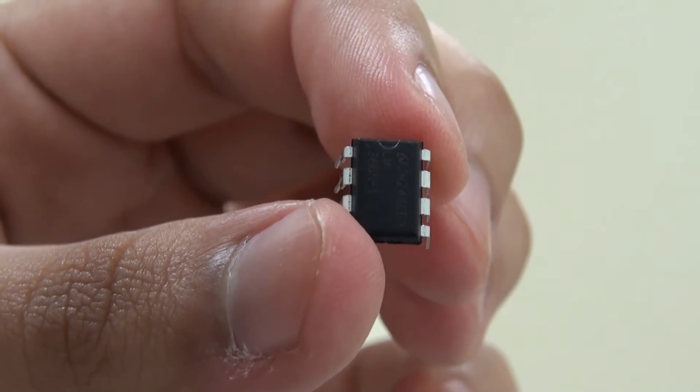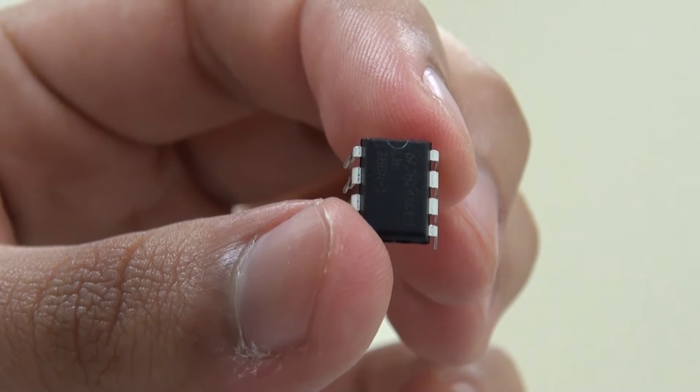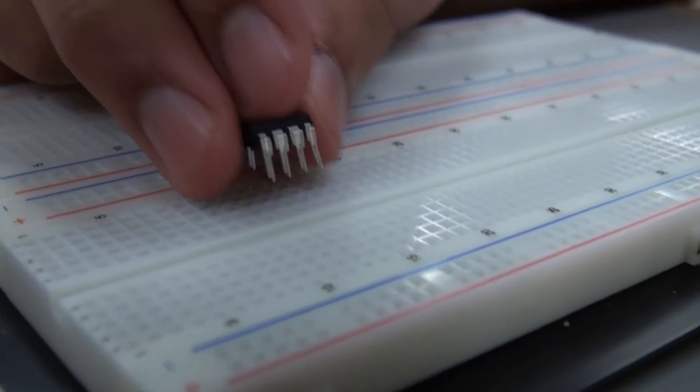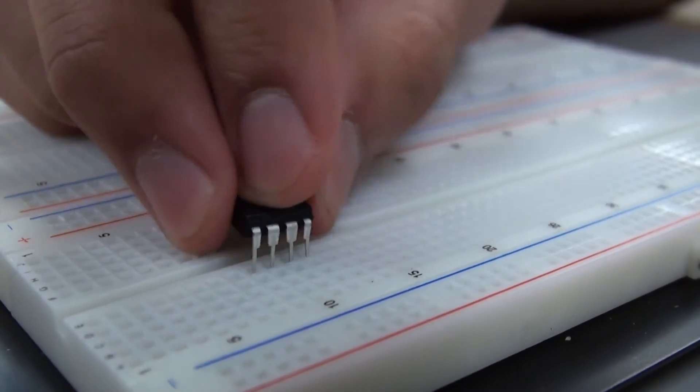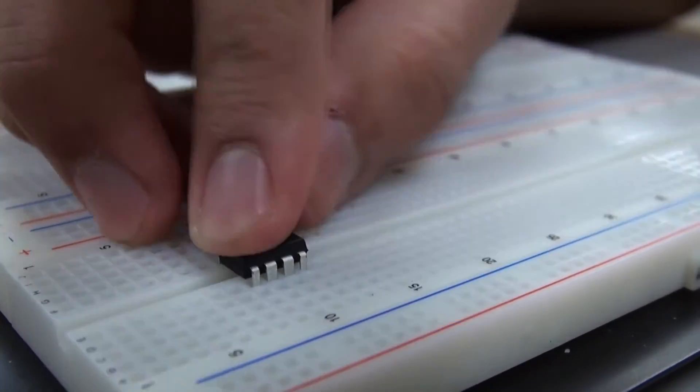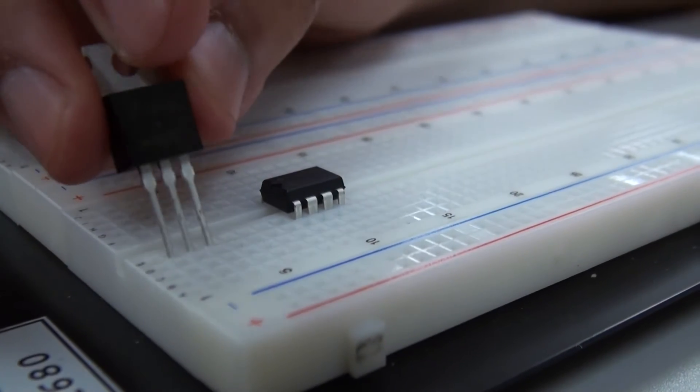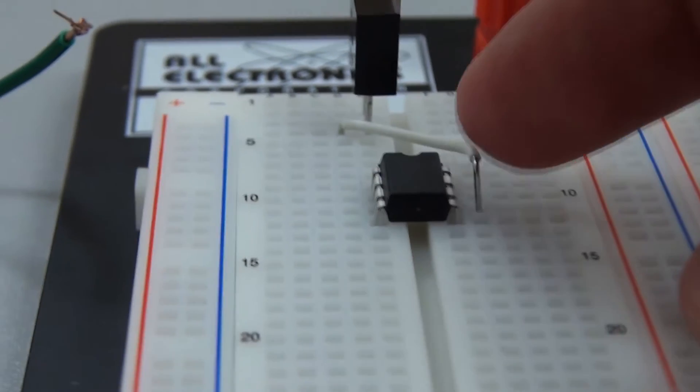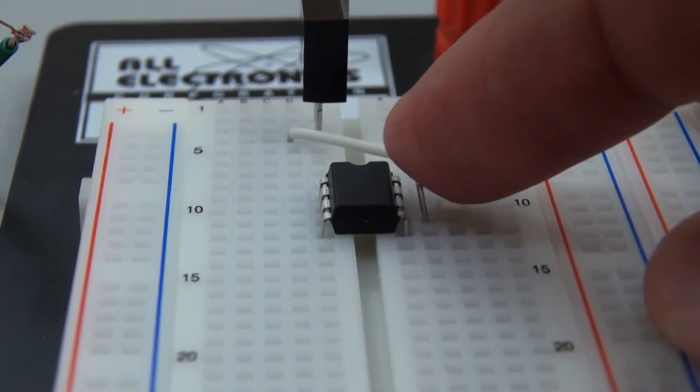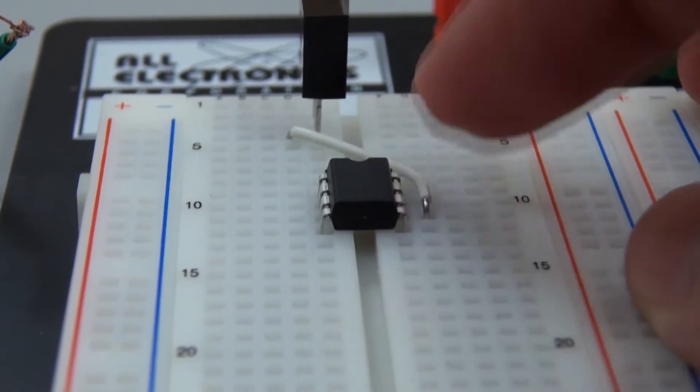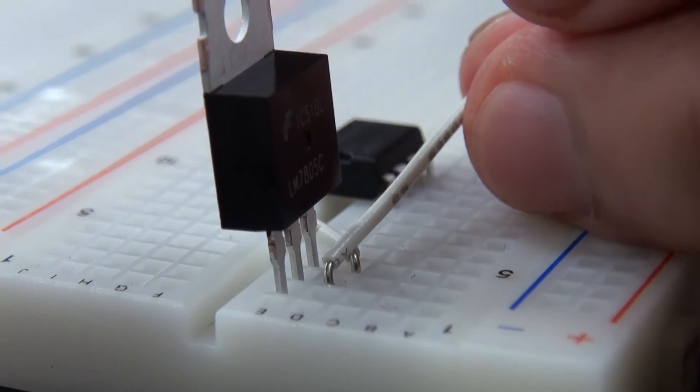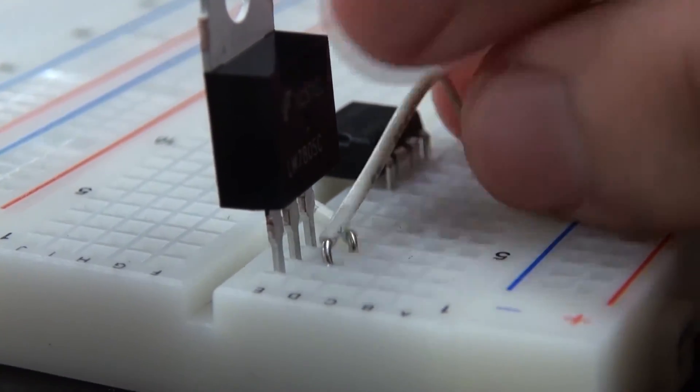This is the LM386 audio amplifier, which is pretty much going to provide current to our speaker. Audio amplifier, 5 volt regulator. Okay, we're jumping the 5 volt regulator to pin 6 of the IC chip, which pretty much provides the voltage to power. Now we are grounding the 5 volt regulator to pin 4, which is ground.